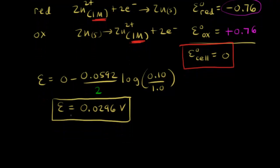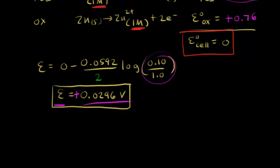As time goes on and the concentrations approach each other, Q is going to change. Q increases as the concentrations approach each other, and therefore the instantaneous cell potential decreases.